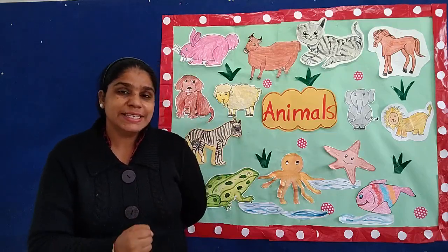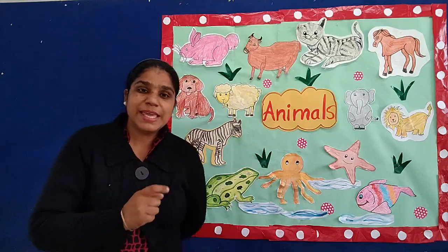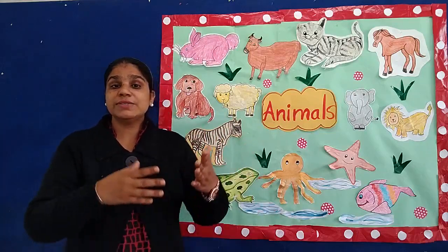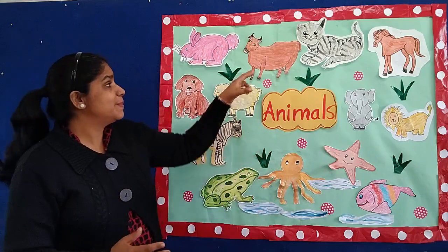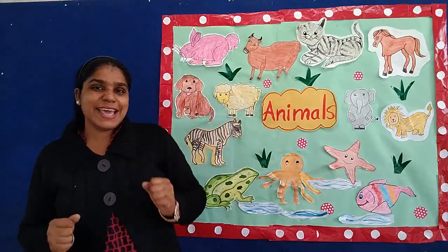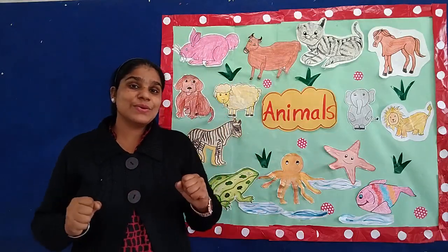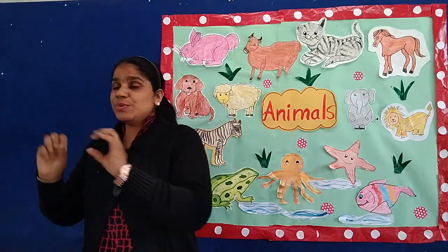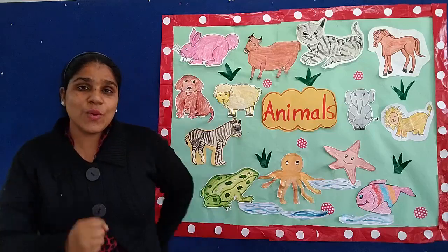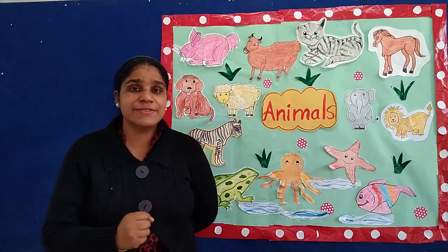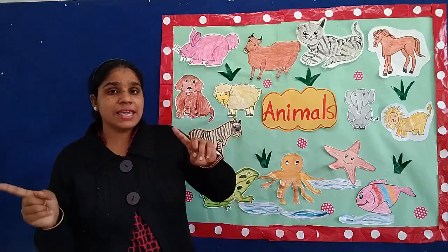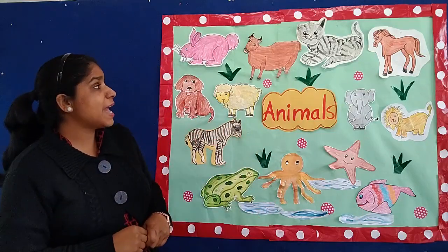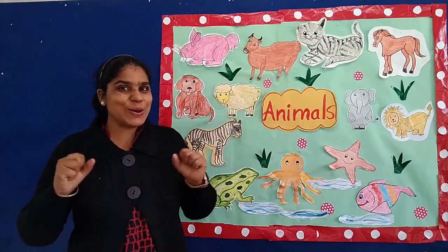Old MacDonald had a farm, E-I-E-I-O. And on his farm he had some cats, E-I-E-I-O. With a meow meow here and a meow meow there, here a meow, everywhere a moo moo. Old MacDonald had a farm, E-I-E-I-O. And on his farm he had some cows, E-I-E-I-O.